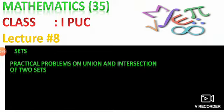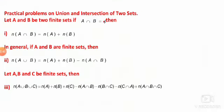Hello students, welcome back to the video classes. Today we are going to study some practical problems on union and intersection of two sets. In an earlier class we saw the definition of disjoint sets: if the intersection of two sets is an empty set, then such sets are called disjoint sets.